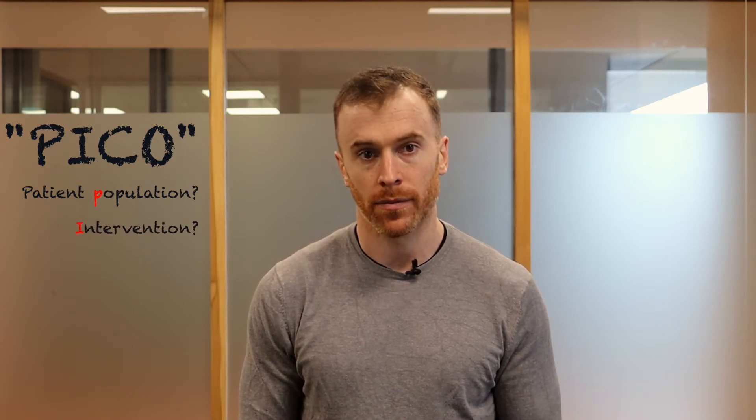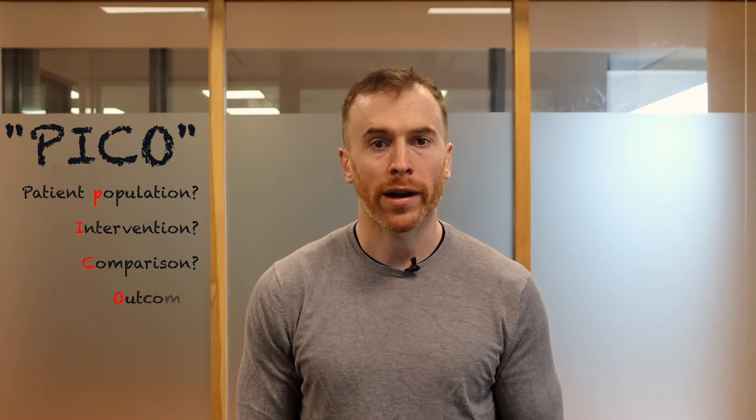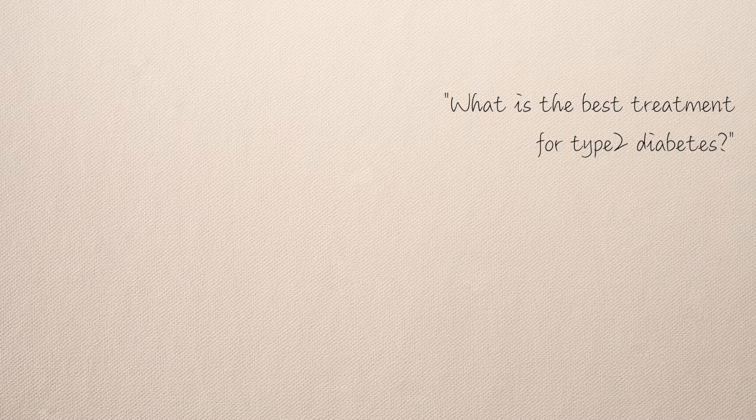In any case, the question must be explicitly defined before searching for the answer. For example, the question 'what is the best treatment for type 2 diabetes?' is too general and broad to be answered well. For evaluating the effectiveness of an intervention, four questions should be considered. These can be remembered using the commonly used acronym PICO: What is the relevant patient population? What intervention is being considered? What is the comparison intervention or patient population? And what outcomes are of interest?